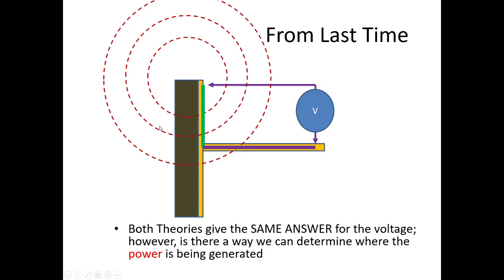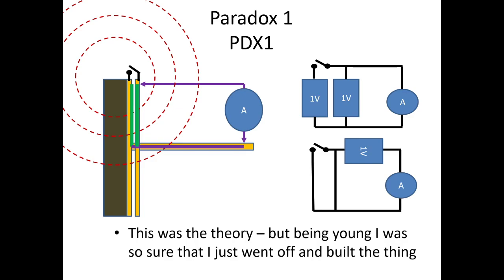Last week we went through paradoxes that show the field has to be stationary, otherwise you have a bunch of paradoxes. But back when I first was trying to figure out a way to prove this one way or the other, one problem was the voltage measurement is the same regardless of the theories. So it's no value making a voltage measurement here.